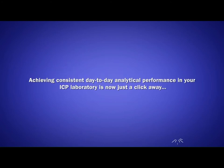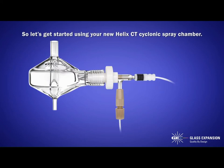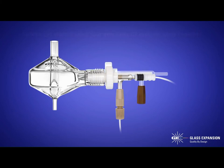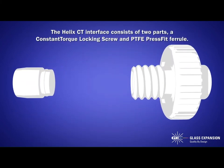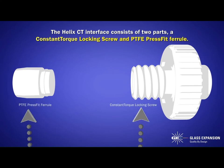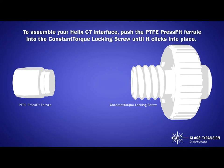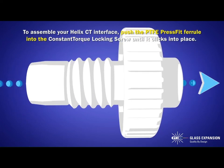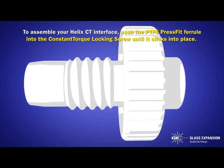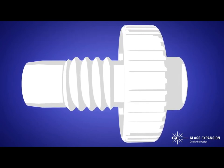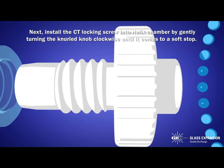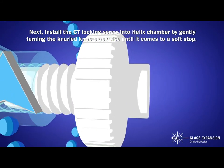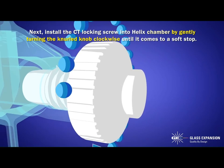Achieving consistent day-to-day analytical performance in your ICP laboratory is now just a click away. The Helix CT interface consists of two parts: a constant torque locking screw and a PTFE press-fit ferrule. To assemble your Helix CT interface, push the PTFE press-fit ferrule into the constant torque locking screw until it clicks into place. Next, install the CT locking screw into the Helix chamber by gently turning the knurled knob clockwise until it comes to a soft stop.